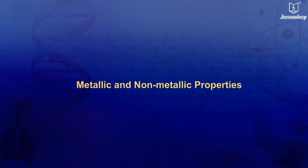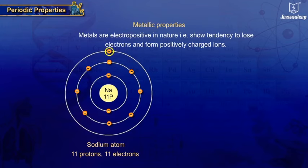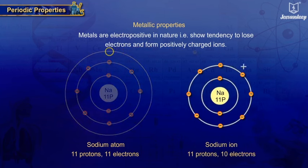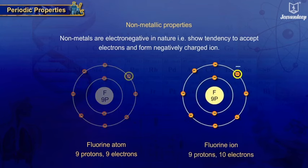Metallic and non-metallic properties. Metallic property: metals are electropositive in nature, i.e. show tendency to lose electrons and form positively charged ions. Sodium atom gives away one electron from its outermost shell easily, forming sodium ion with one unit of positive charge. Non-metallic properties: non-metals are electronegative in nature, i.e. show tendency to accept electrons and form negatively charged ions. Fluorine atom accepts one electron into its outermost shell easily, forming fluoride ion with one unit of negative charge.